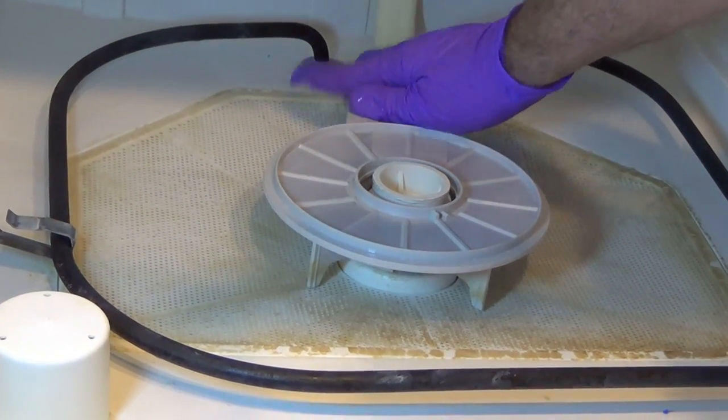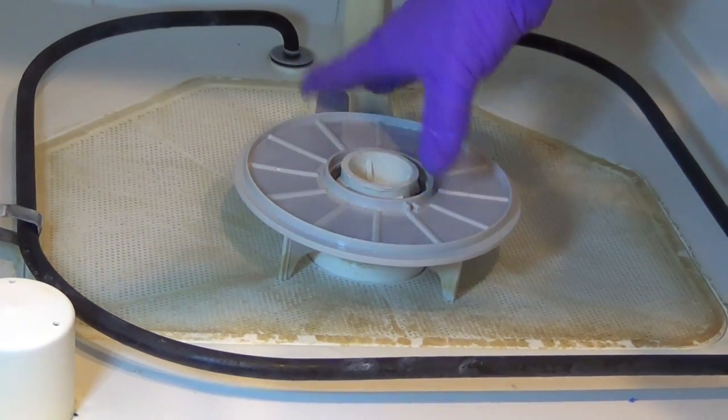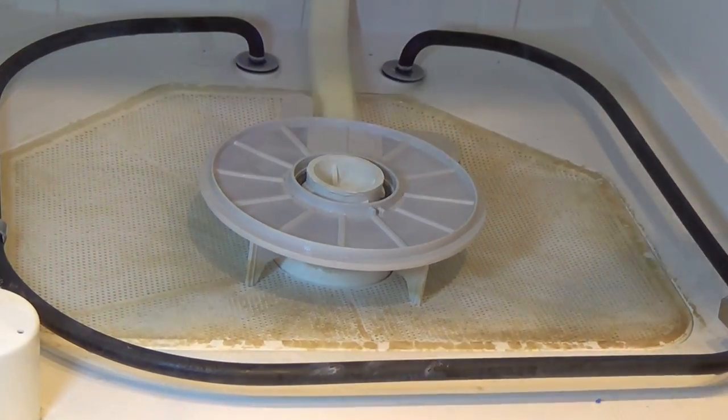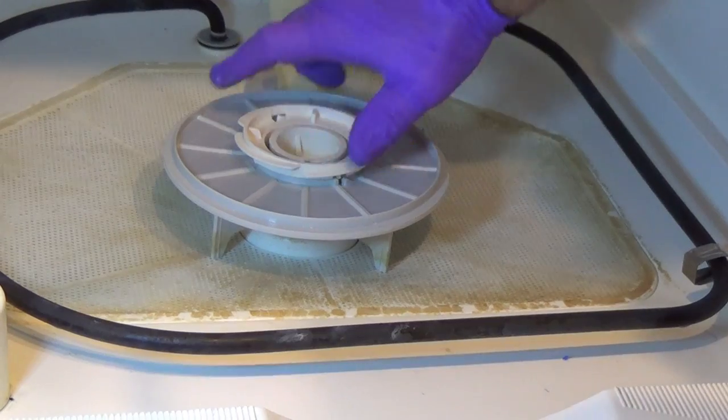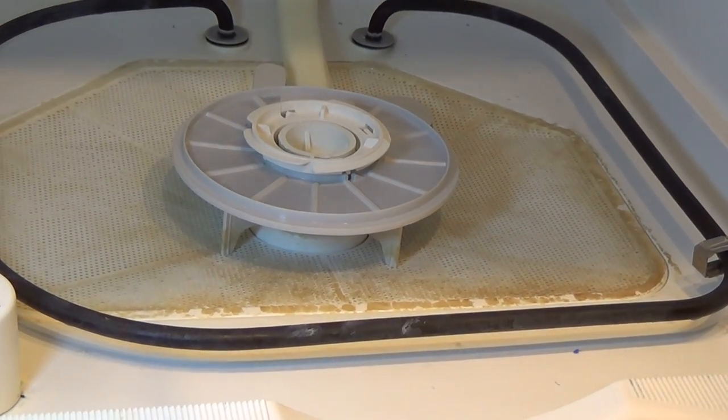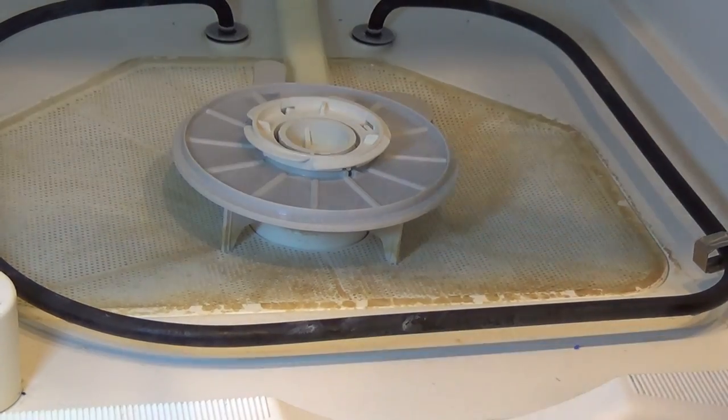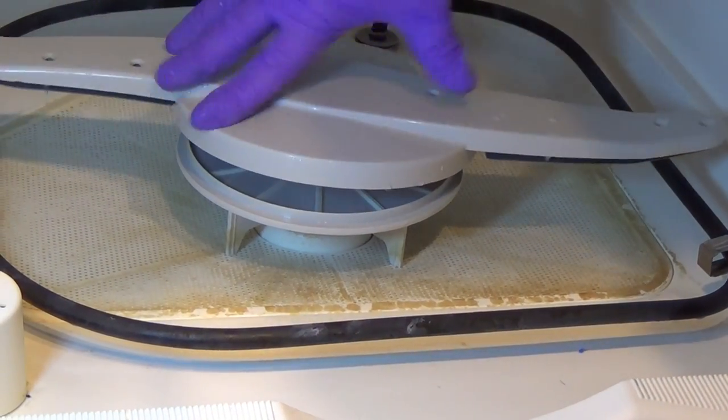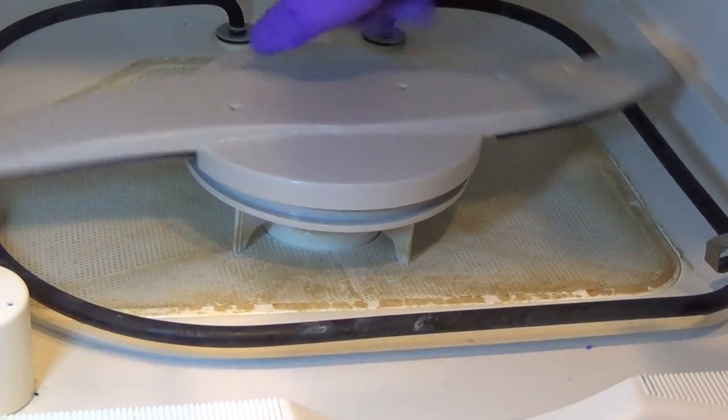This little nub sticking out goes down in this little hose here. And you set it back down. The hub nut goes on.